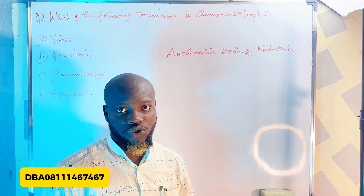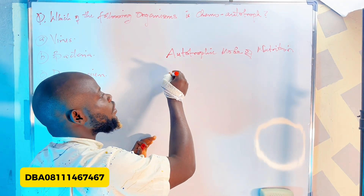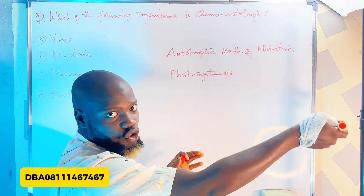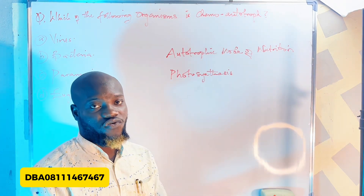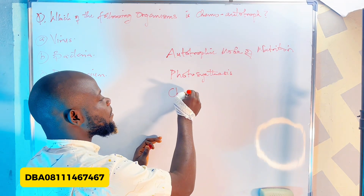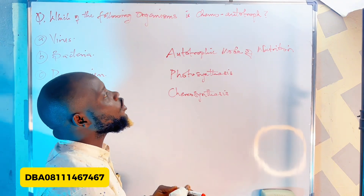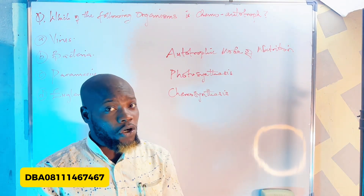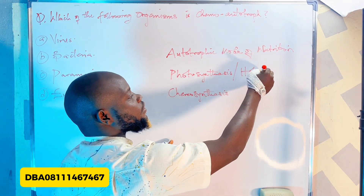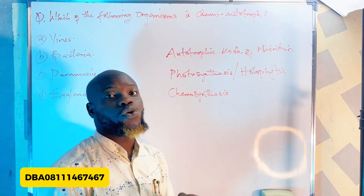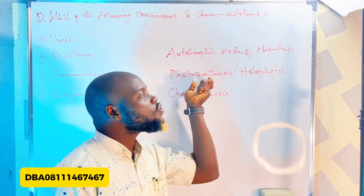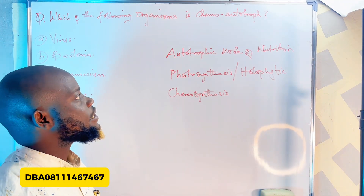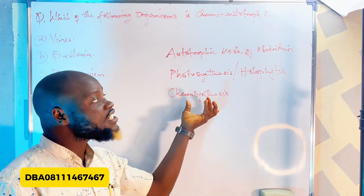We have two forms of autotrophic nutrition: photosynthesis, also called photo autotrophic, and chemosynthesis, also called chemo autotrophic or chemo autotroph. Please note that photosynthesis can also be called holophytic — that is very important. JAMB most times uses holophytic because most students are not familiar with that term.